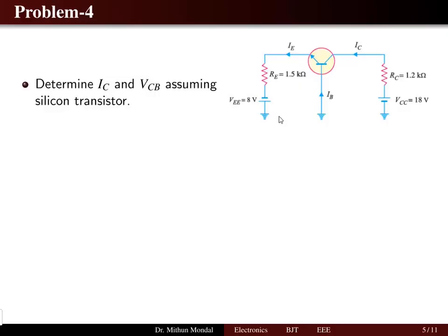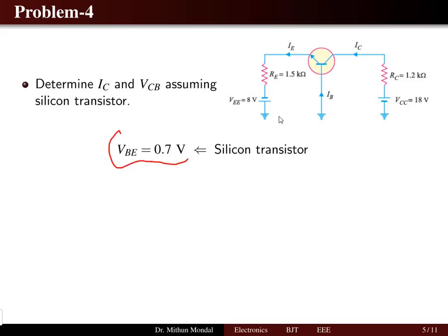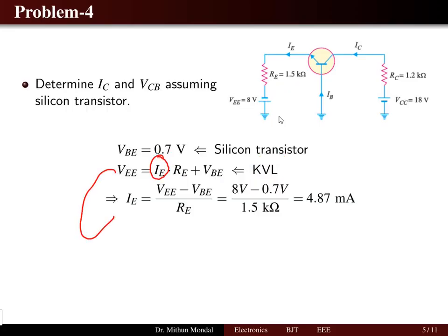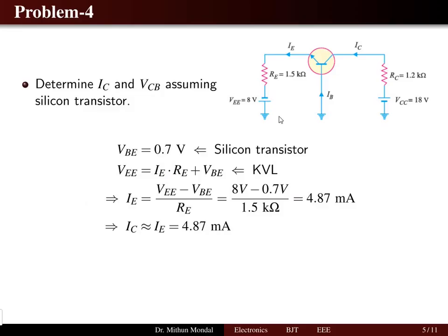In the fourth problem, we need to find the collector current and the collector-to-base voltage. The transistor is a silicon transistor, so we take the appropriate barrier potential of 0.7 volts for the base-emitter region. Applying KVL in the input loop: emitter voltage equals the drop across the emitter resistance (IE × RE) plus the base-emitter voltage of 0.7 volts. We find the emitter current as 4.87 milliamps. Since alpha is not given, we take alpha close to 1, so collector current approximately equals emitter current at 4.87 milliamps.